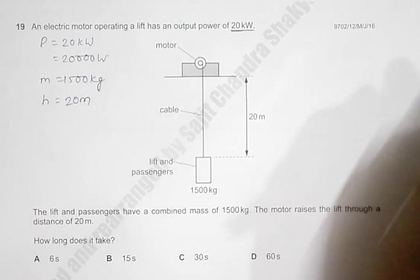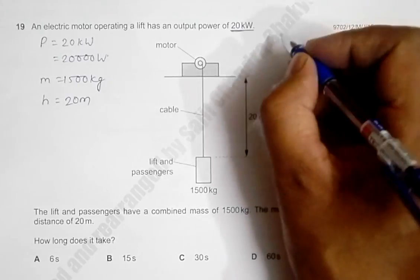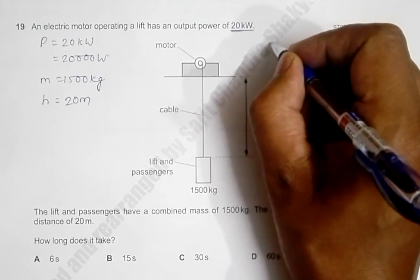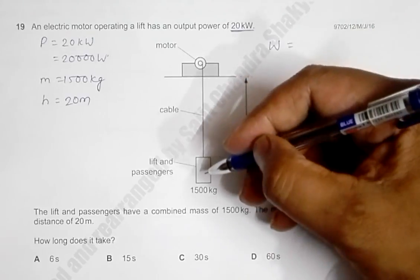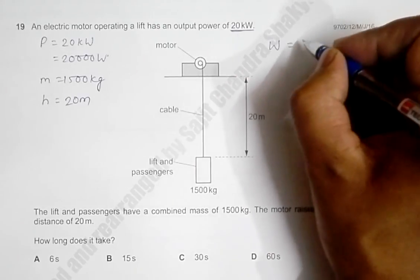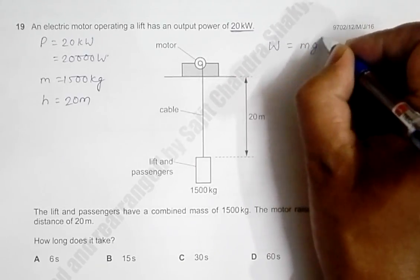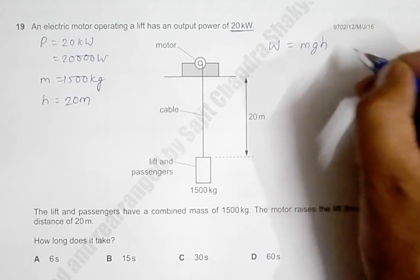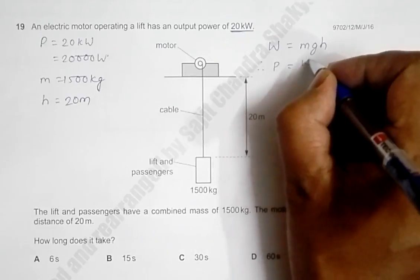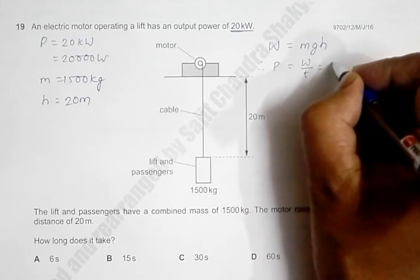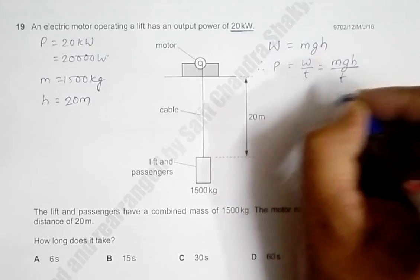The simple equation that we have is the work done by the motor raises the potential energy by mgh, where h is the height that it rises. Therefore, the power of the motor equals work by time, and that's equal to mgh by t.